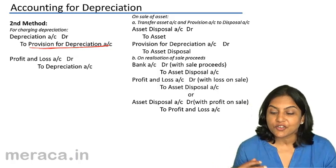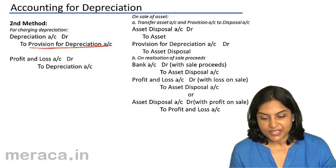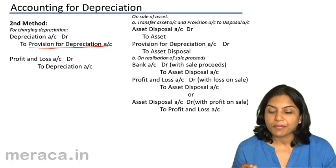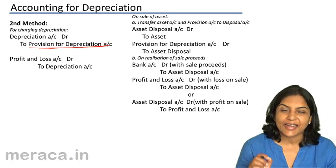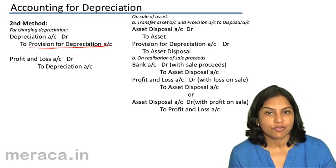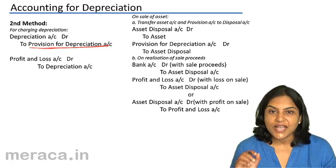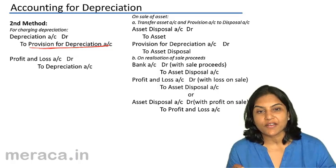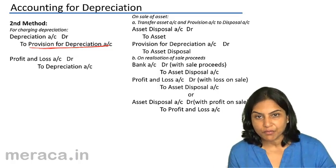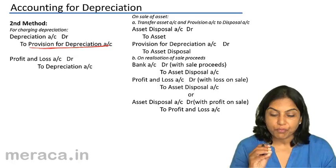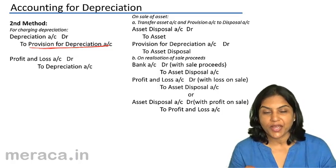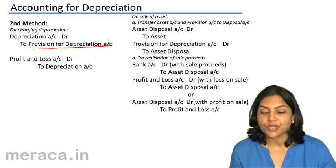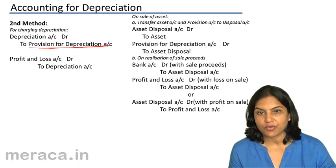What happens in case of sale of an asset? When an asset is sold, we normally create an asset disposal account. To this asset disposal account, we transfer whatever balance of asset we have in our books. Whatever balance of provision for depreciation we have with respect to this asset, we transfer to the asset disposal account.